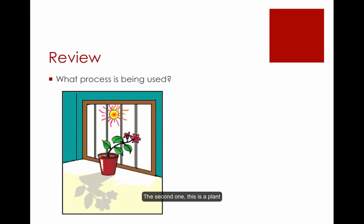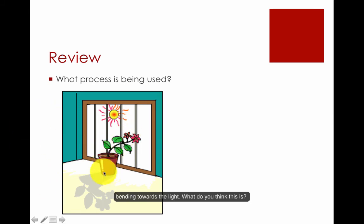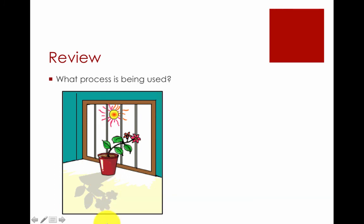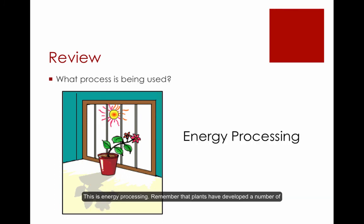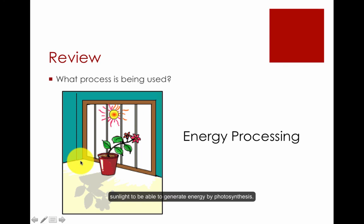The second practice problem: this is a plant bending towards the light. Plants have developed a number of strategies to capture the maximum amount of sunlight through their leaves. As we know from looking at plants on a windowsill, they grow toward the sunlight to generate energy by photosynthesis. This is energy processing.